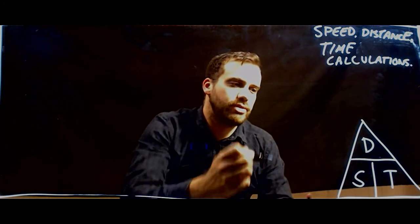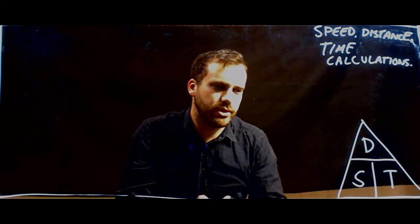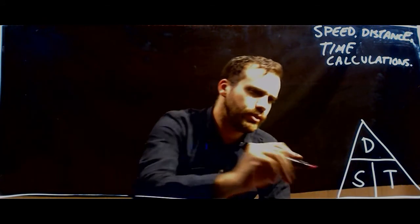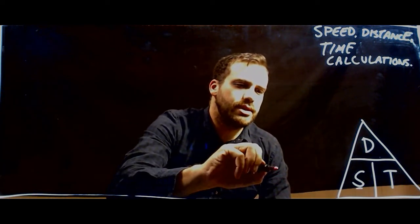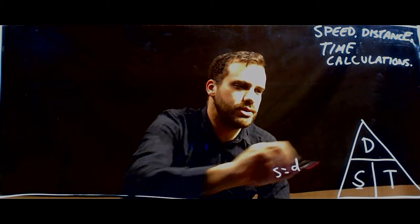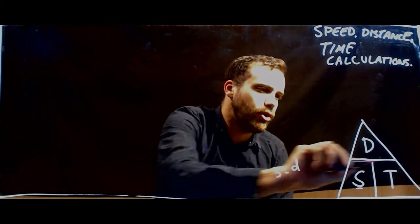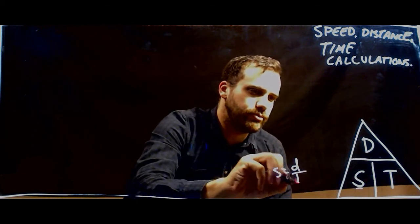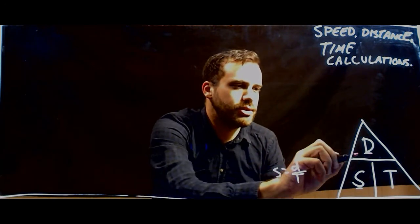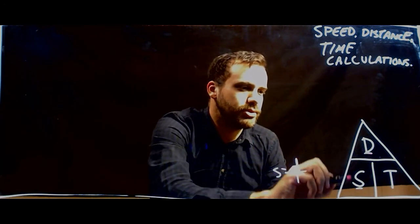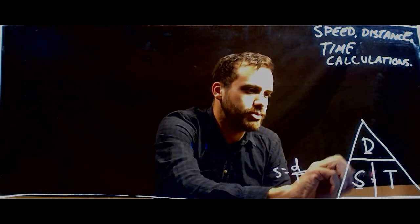Now this triangle represents three formulas and hopefully you remember those three formulas. If you want to find out what speed is, you can say that speed equals distance over time. If you want to know what distance is, you can say that distance equals speed times time.